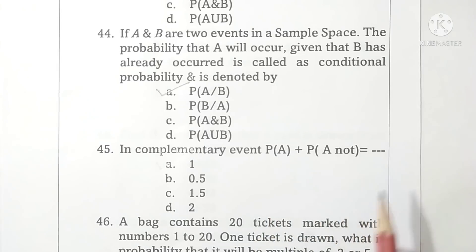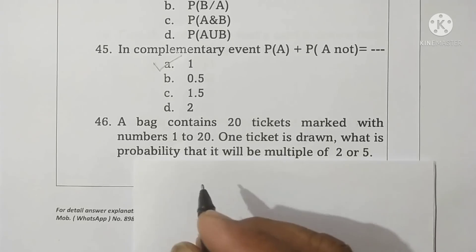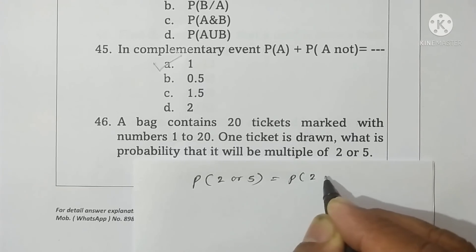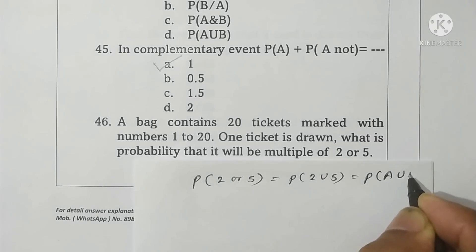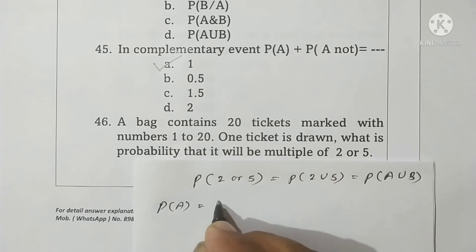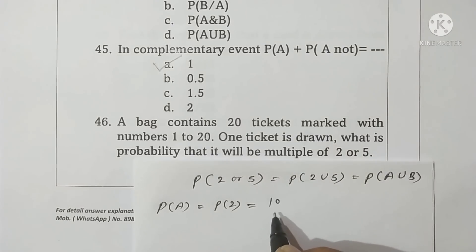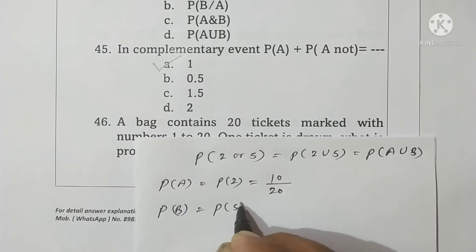Question 46: A bag contains 20 tickets marked with numbers 1 to 20. One ticket is drawn. What is the probability that it will be a multiple of 2 or 5? We find probability of A union B. Probability A (multiple of 2) is 10 upon 20, since there are 10 multiples of 2 up to 20. Probability B (multiple of 5) — multiples of 5 up to 20 are 4, so probability B is 4 upon 20.